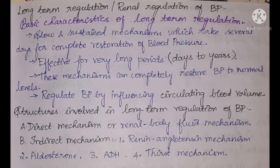Long-term regulation or renal regulation of blood pressure: basic characteristics are that these are slow and sustained mechanisms taking a very long time for complete restoration, effective for days to years. These mechanisms can completely restore blood pressure to normal levels. They regulate BP by influencing circulating blood volume. Structures involved: direct mechanism (renal body fluid mechanism) and indirect mechanisms — renin-angiotensin mechanism, thirst mechanism, aldosterone, and antidiuretic hormone.